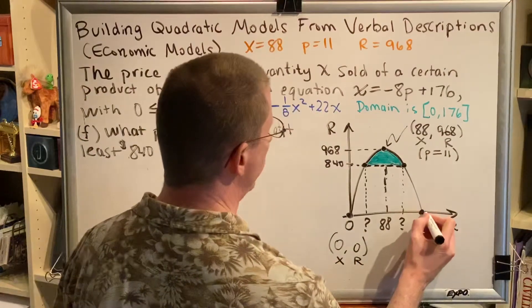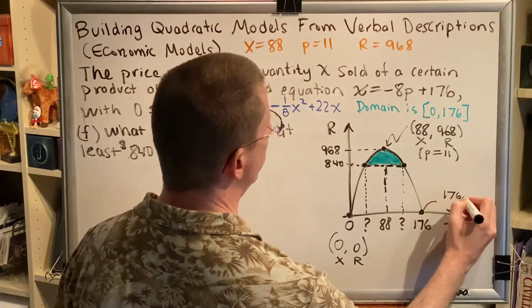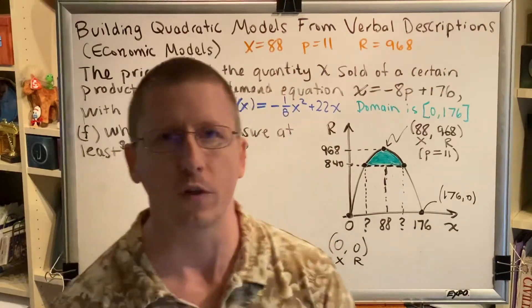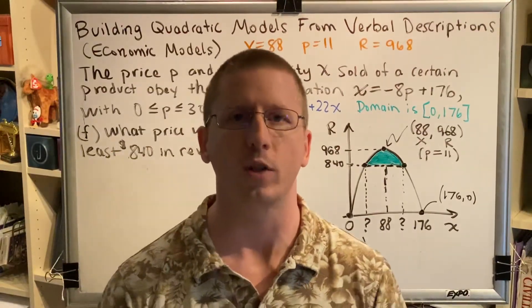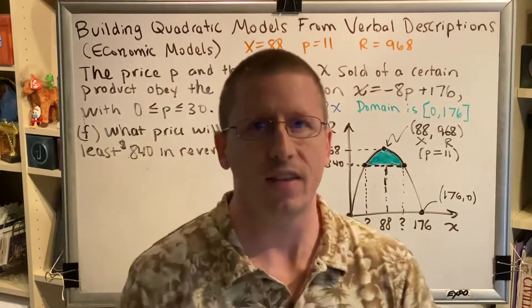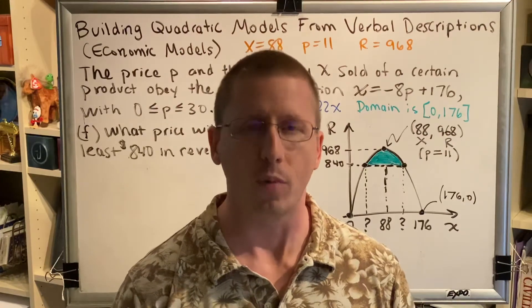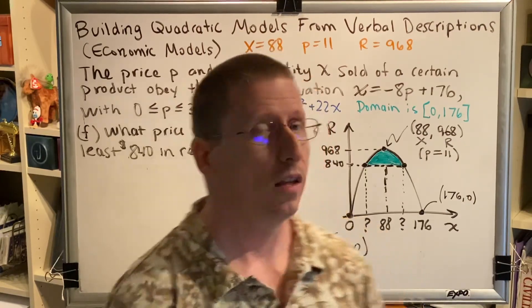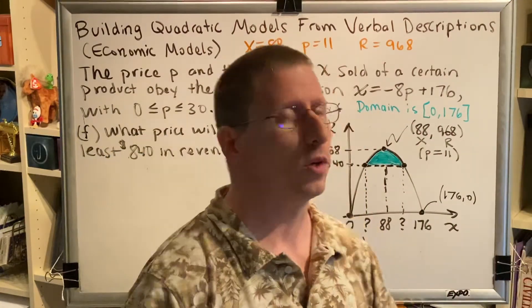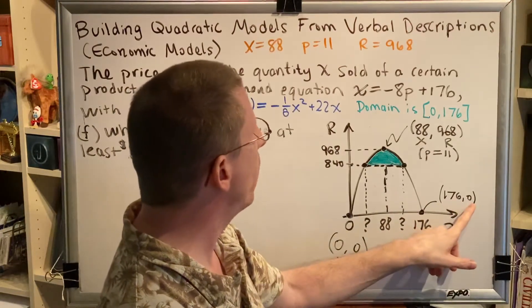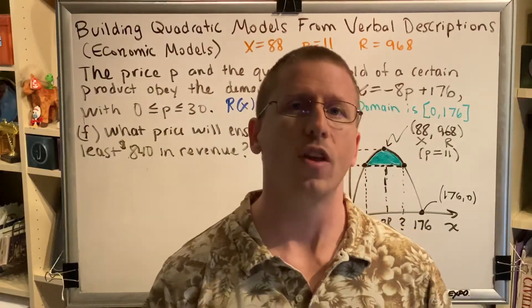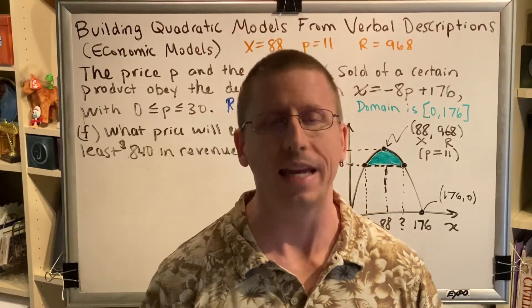Let's look at this data point right here, 176. This is actually the ordered pair (176, 0). The only way you can get 176 items to leave your store is if the price you charge is nothing, free. And that's the reason why if you sell 176 items, the amount of money you will bring in is absolutely zero. These are our two extremes.